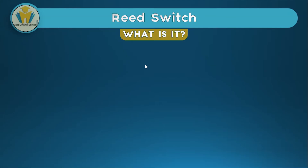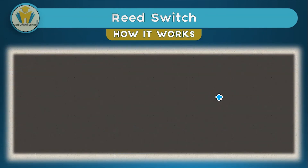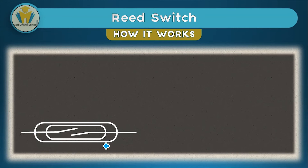Magnetism is also used in the reed switch. A reed switch is a switch made up of two or more ferromagnetic reeds. In this diagram, these parts here are the reeds — one reed and another. These reeds are enclosed in an airtight glass envelope. An open reed switch looks like this — the reeds are not touching, meaning the circuit is broken, and this indicates the magnet is far from the reed switch.